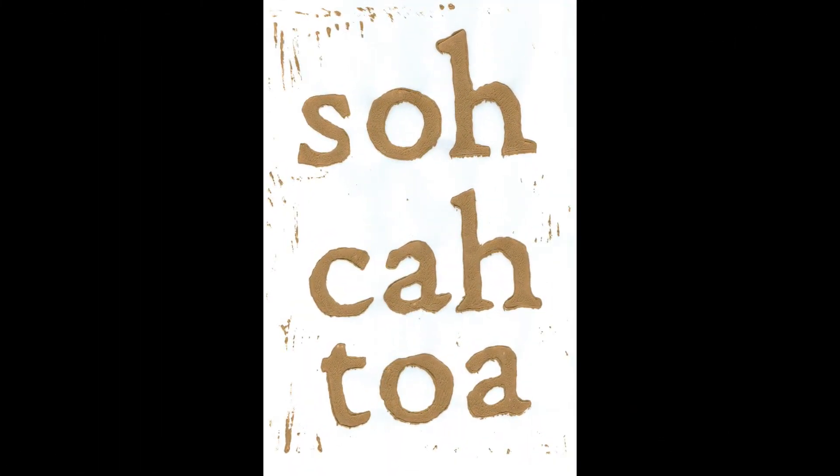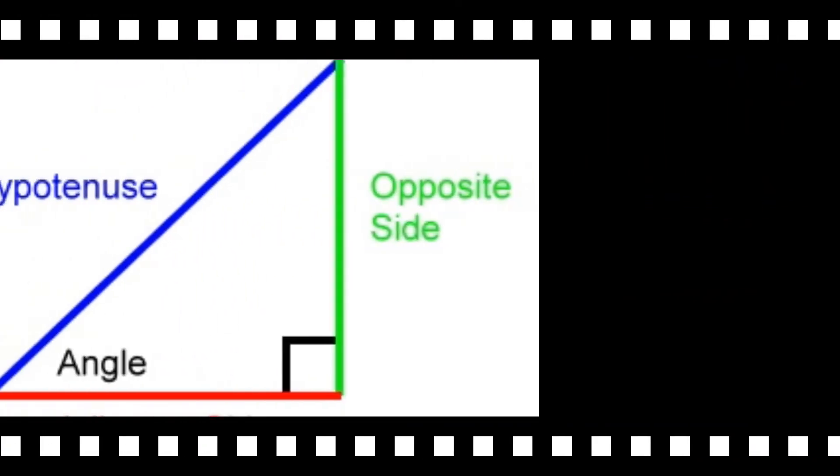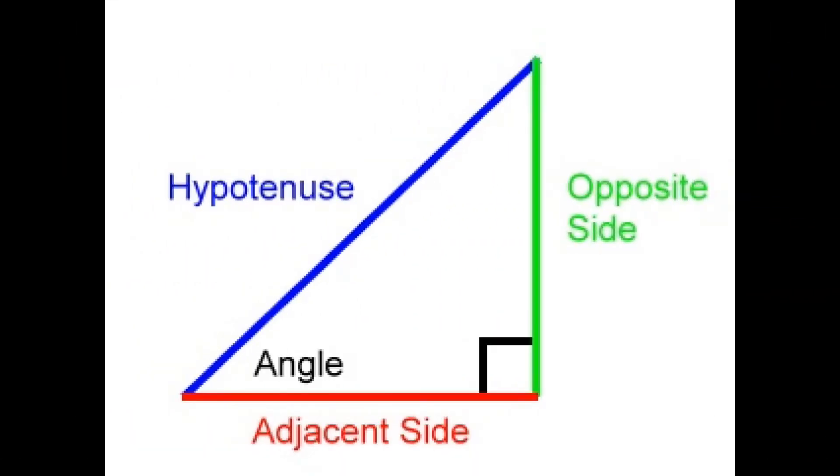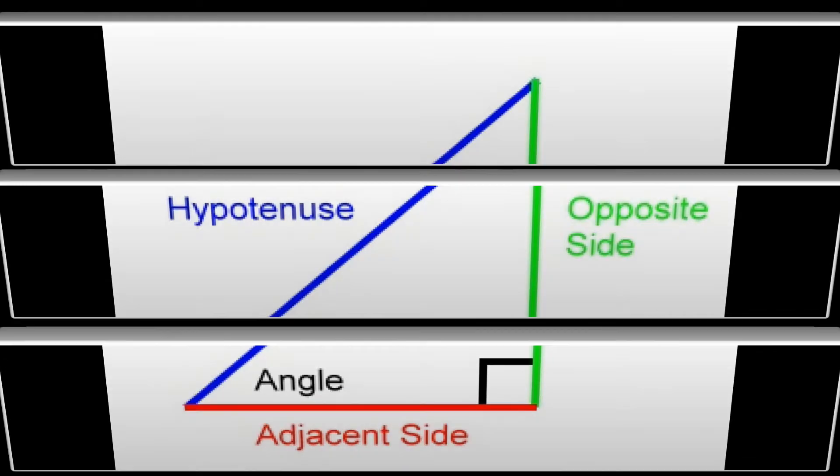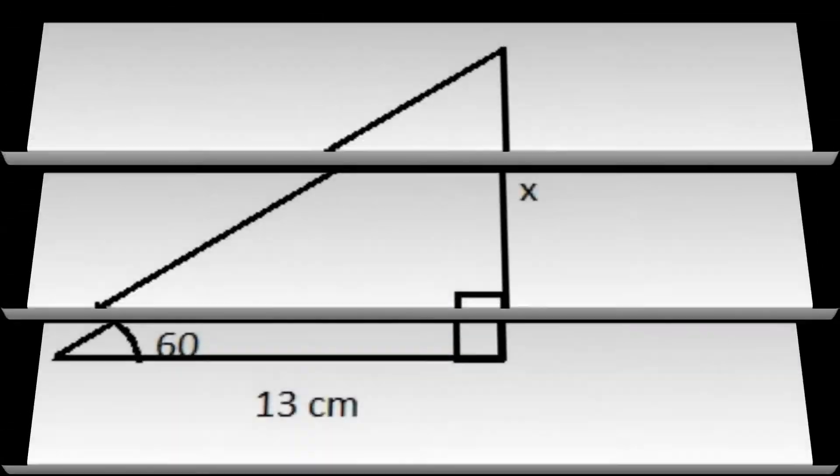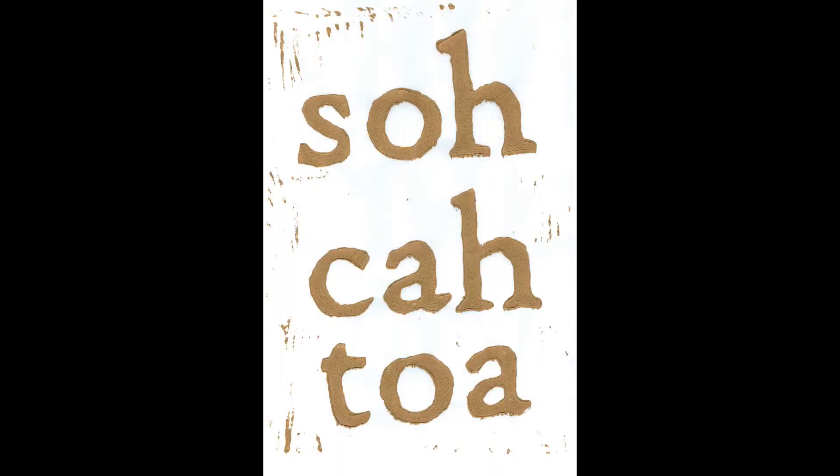In physics, in physics, we use SOH-CAH-TOA all the time. We use it with right triangles to find the x and y. We use SOH-CAH-TOA all the time.